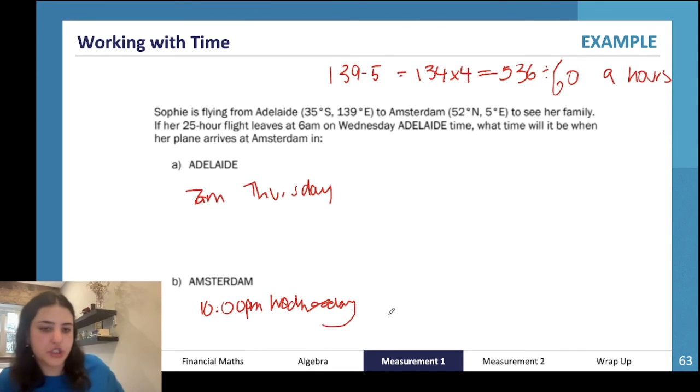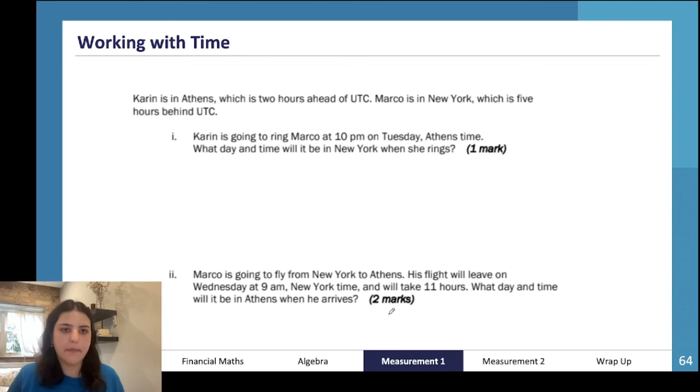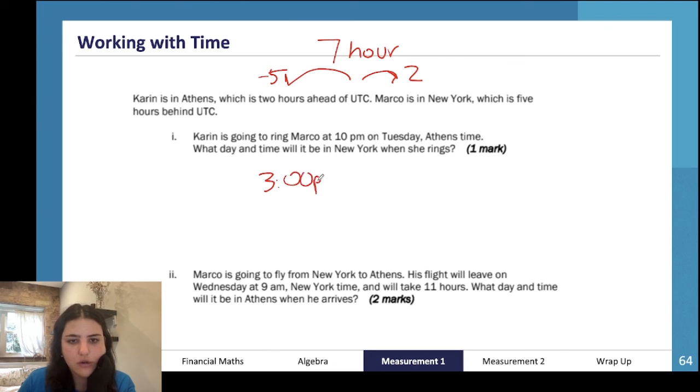Let's do our last question here for working with time. Karen is in Athens which is 2 hours ahead of UTC. Marco is in New York which is 5 hours behind. Karen is going to ring Marco at 10 p.m. on Tuesday Athens time. What time and day will Marco be picking it up? There is a 7 hour difference, so 7 hours before 10 p.m. is going to be 3 p.m. on Tuesday in New York. Marco is going to fly home from New York to Athens. His flight will leave on Wednesday at 9 a.m. and will take 11 hours. What time and day will he arrive in Athens? 11 hours later is going to be 8 p.m. in New York, but we also need to add 7 hours to that, so it's going to be 3 a.m. in Athens on Thursday. Remember, you always want to write the day because if you just wrote 3 a.m., always write the day as well.